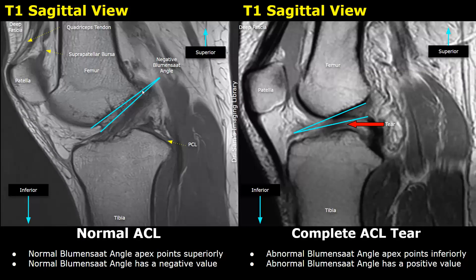Any angle formed in the normal case will have a negative value. But in cases of ACL tears, the Blumensat angle will be formed down here, facing inferiorly. When we draw the Blumensat line and the second line along the margins of the ACL, the lines will meet at this point with the apex facing downwards — a positive value. A positive Blumensat angle is seen in ACL tears.